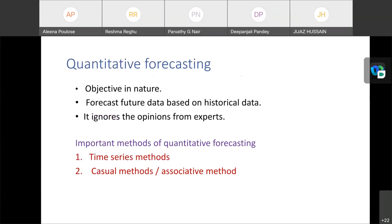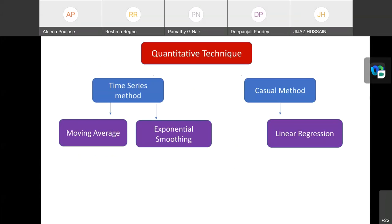Next one is quantitative forecasting. Quantitative forecasting is objective in nature. It forecasts future data based on historical data. It ignores the opinions from experts. Important methods of quantitative forecasting are time series method. Next one is casual or associative method. Here we are discussing the most important quantitative technique. First one is in time series method. There are another classification: moving average, exponential smoothing, econometric approach, indicator approach, etc. And also in casual method, linear regression can be used.